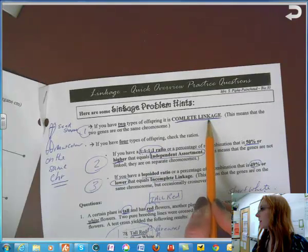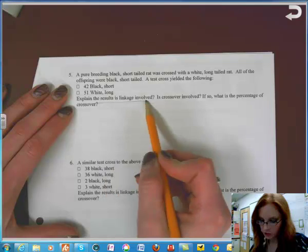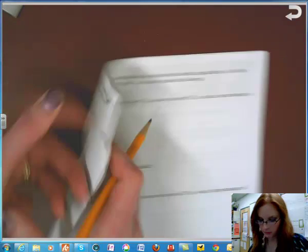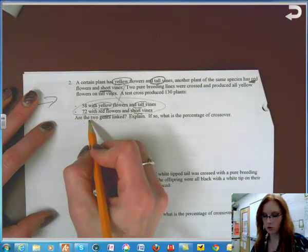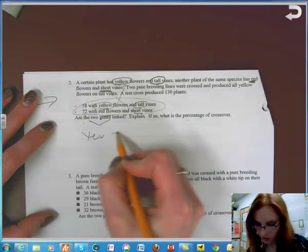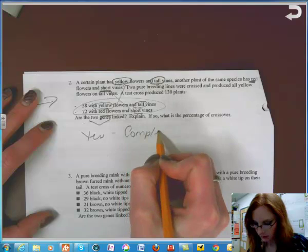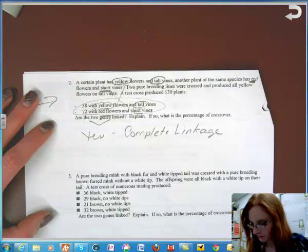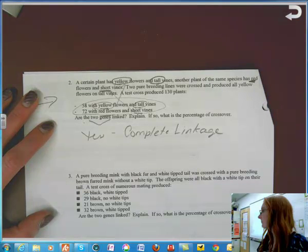When you go back to this page, it says if you have two types of offspring, it's complete linkage. They look exactly like the parents. So the question, explain the results. Is linkage involved? Yes. Wrong page. Are the two genes linked? Yes. Complete linkage? Done. There's nothing for you to calculate in this question.